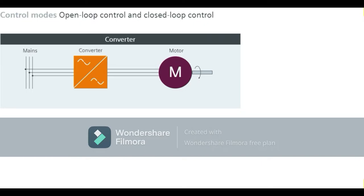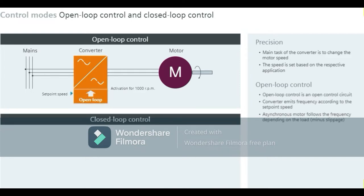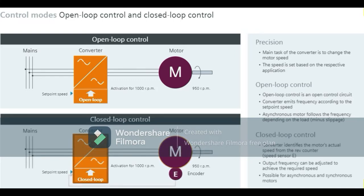The converter's main task is to change the motor speed, which is normally referred to as speed control. The question that often arises is how precisely the speed must be set — this depends on the respective application. In open-loop control, the converter emits a frequency corresponding to the set point value, and the asynchronous motor follows the frequency minus slippage, meaning its speed depends on the load. In closed-loop control, the converter can detect the motor's actual speed using a rotary encoder, also known as a speed sensor, and if necessary adjust its output frequency to maintain the precise desired speed. This function can be used with both asynchronous and synchronous motors.